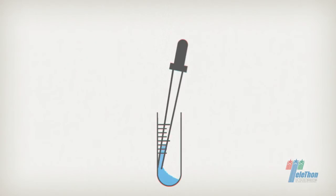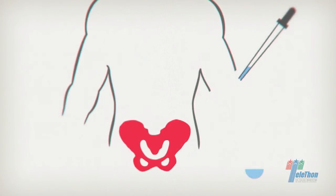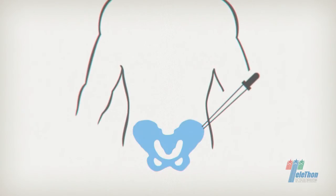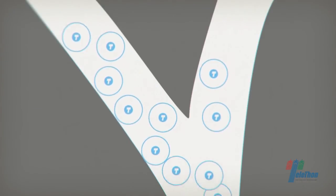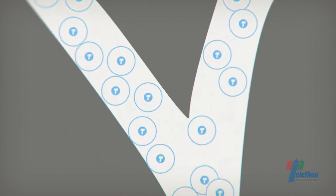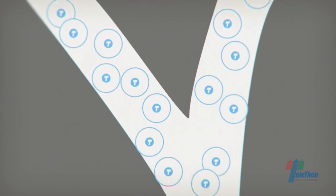The cells are then re-infused into the patient, returning to their marrow, their home. And here they begin to generate other cells that pass through the blood stream and spread throughout the organism.